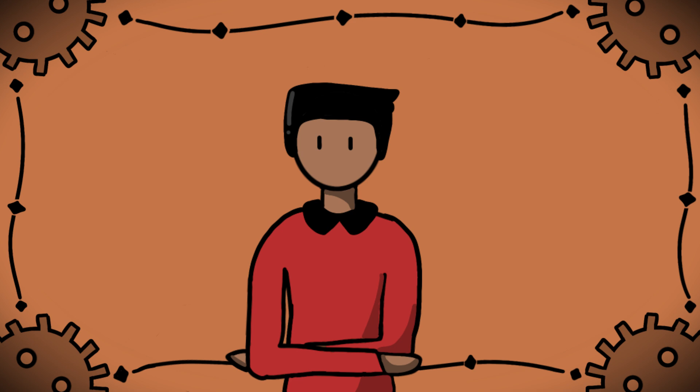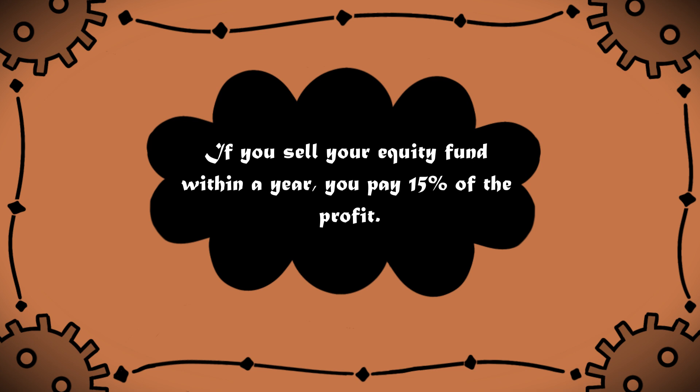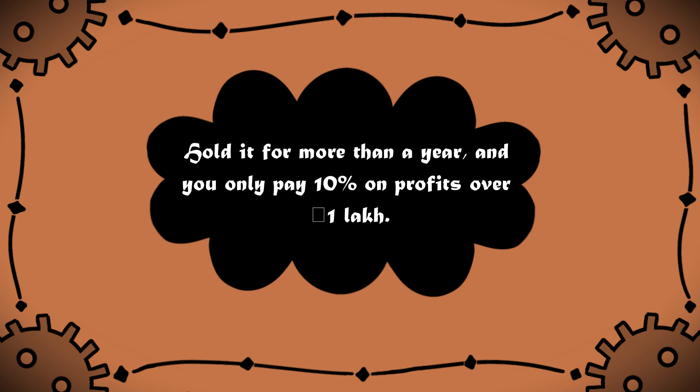Next, taxation on capital gains. Here's the thing, how long you hold on to your mutual fund matters for these taxes. Short term capital gains is when you sell your equity funds within a year, you'll pay 15% of the profit. Meanwhile, for long term capital gains, if you hold it for more than a year, you'll only pay 10% on profits over 1 lakh rupees.